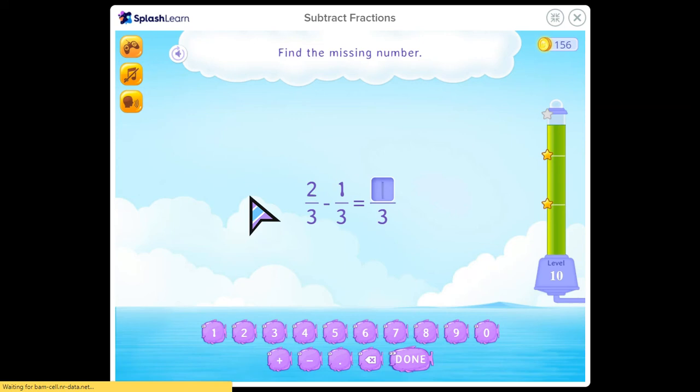Find the missing number. 2 minus 1 is 1. I'm only going to focus on the numerator because it's only asking me to fill in the numerator. So I will just do 2 minus 1.